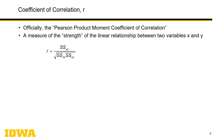We'll begin with the coefficient of correlation r. That is the standard variable used for this term, and it could otherwise be called the Pearson product moment coefficient of correlation. There is another type referred to as Spearman's, so you should refer to this as the Pearson in a publication. The standard definition is a measure of the strength of the linear relationship between two variables x and y, and this concept of strength and linearity always comes up in statistical textbooks.